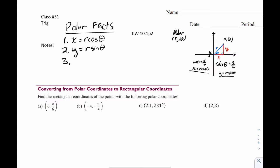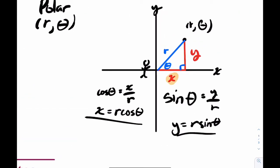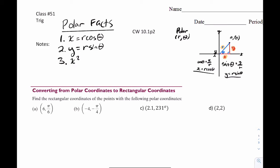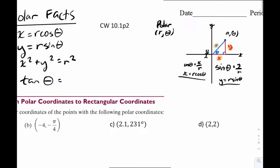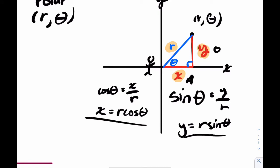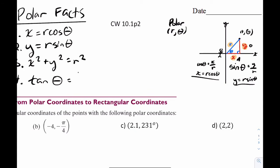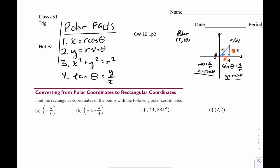Polar fact number three: this is a right triangle, so let's link all three sides using the Pythagorean theorem. x squared plus y squared must equal r squared. Polar fact number four is the least obvious. Tan theta equals opposite over adjacent, so we can write tan theta equals y over x. You want to really highlight that in your notes.